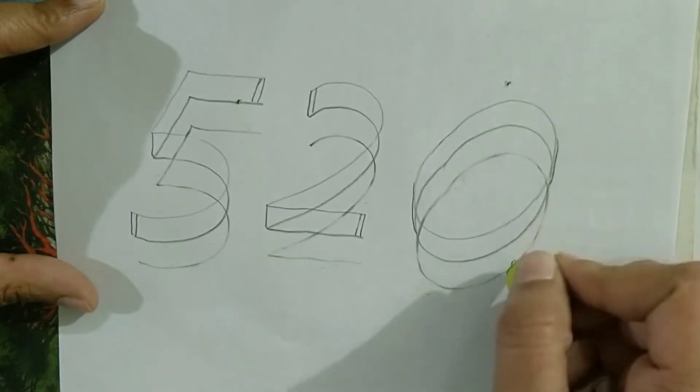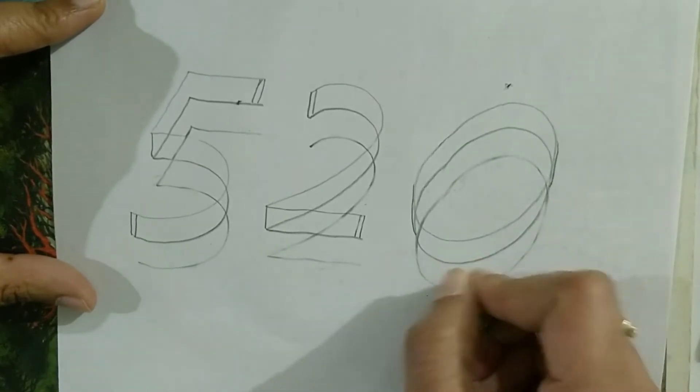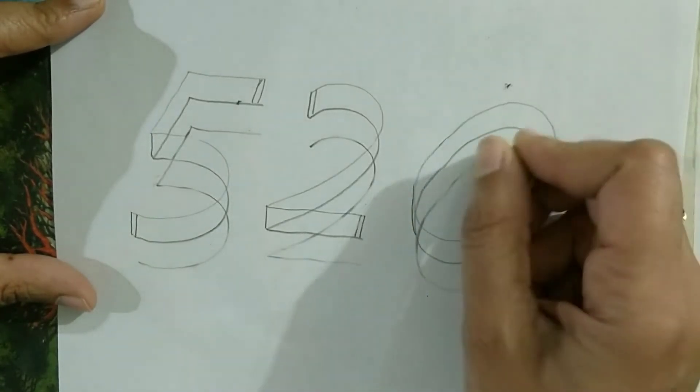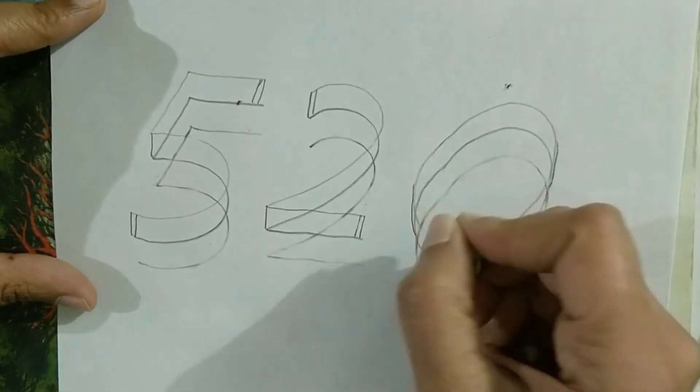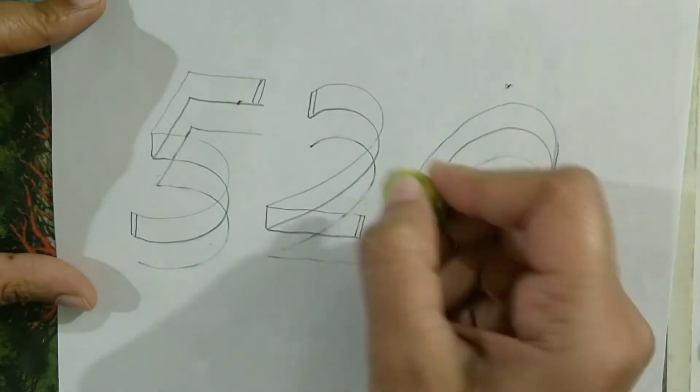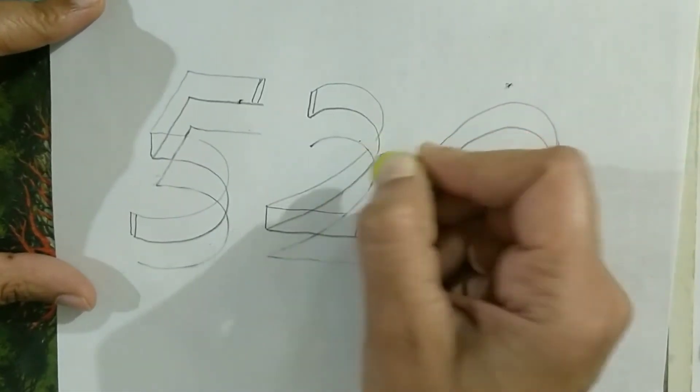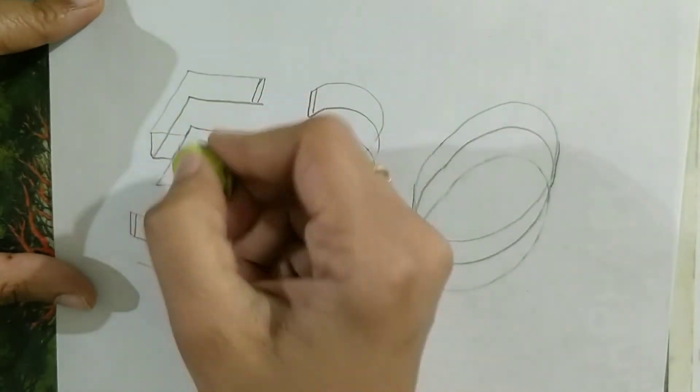So you see, this third layer is there but it's very light. The reason for this is I'm going to add the effect in the end to make it look 3D, and there, this particular third layer will add a lot of effect. That's why I am doing the erasing part.